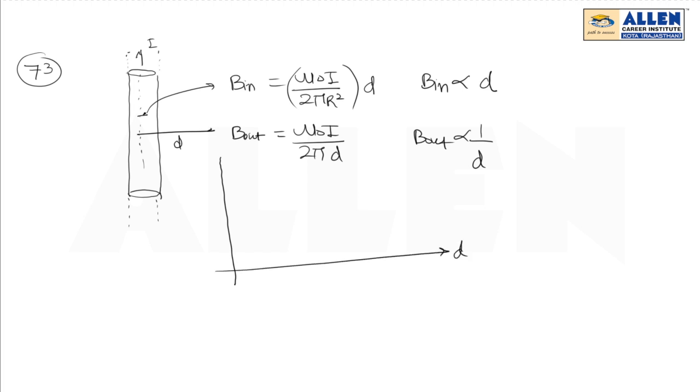For B versus distance d, at inside points the graph is directly proportional to d, so we get a straight line. According to the expressions, the field is maximum at the surface, and after that it will be inversely proportional to d.